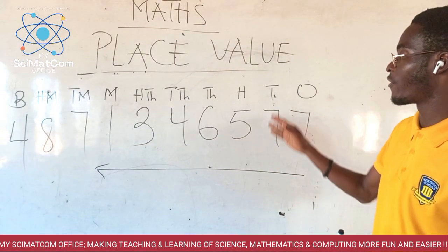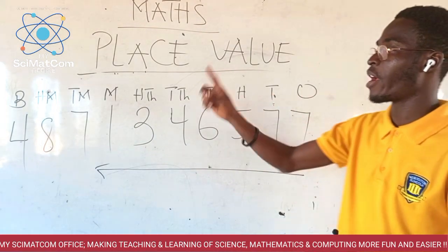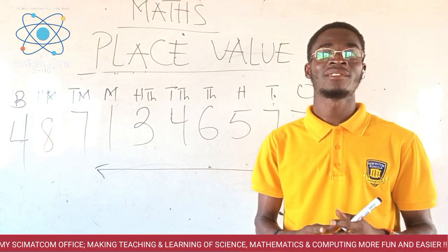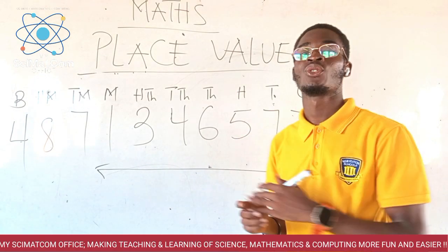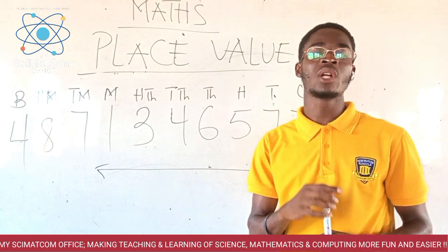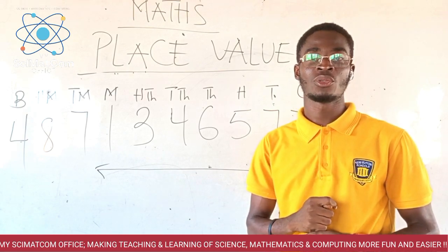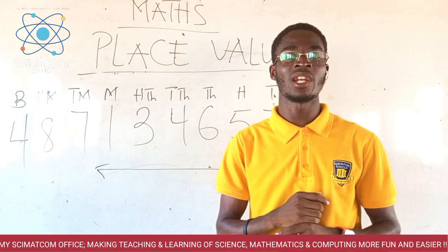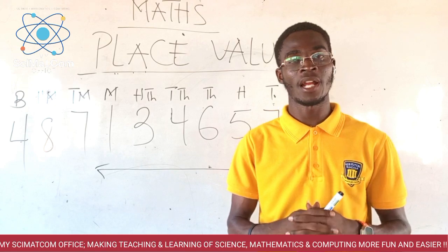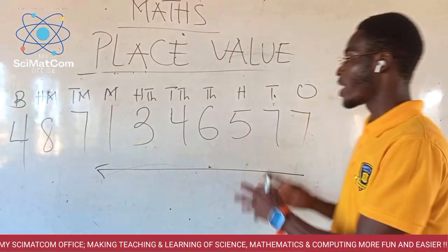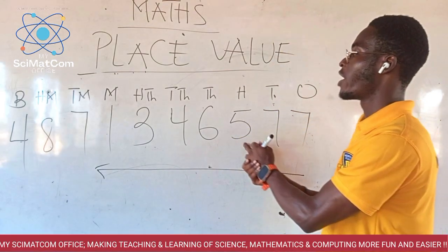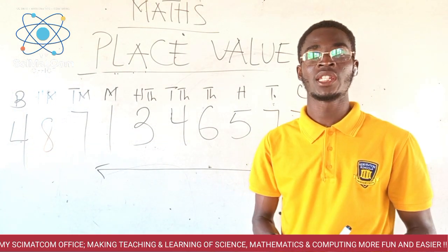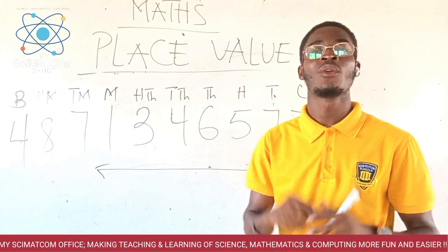Each digit — this seven, this seven, this five — each of them have their own designated place. So as a learner, this is how to identify the place of a number. Now let us look at the value. The value of each number also depends on the place of that particular number. Each of the digits here have their own place, and based on the place, we can find their value.